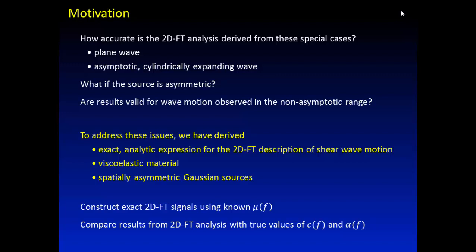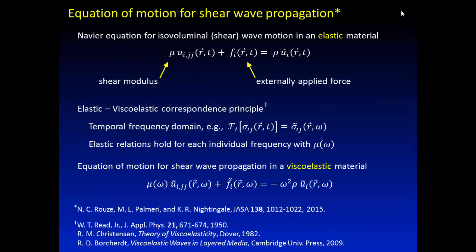From this what we can do is then come up with known truth values from our formulation for what phase velocity and attenuation should be as a function frequency and compare it to the values that we get when we look at the 2D Fourier transform space. How do we do that? So we have the perfect combination of an 8 a.m. talk and math, so I'm going to hopefully make this a little more exciting.